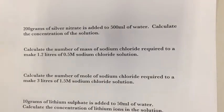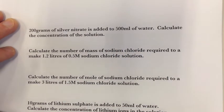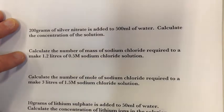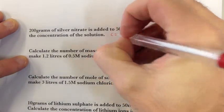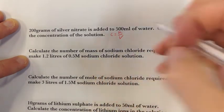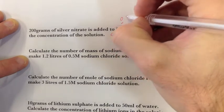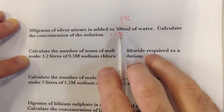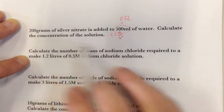Here's me explaining how to do some of these calculations in concentration. The first question is: 200 grams of silver nitrate is added to 500 mils of water. Calculate the concentration of this solution. So I'm going to write down my equation: C equals N over V — concentration equals number of moles divided by volume. I know my volume — it's 500 mils — and remember, volume always needs to be in litres, so this is 0.5 litres. I want to know my number of moles, but I've got grams.